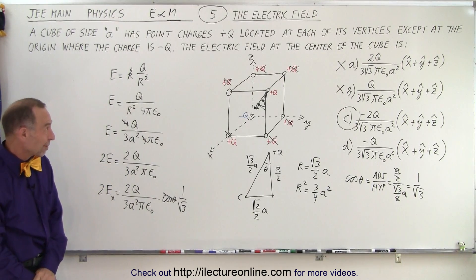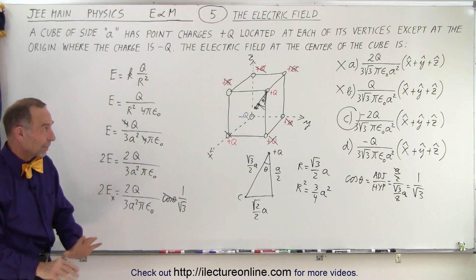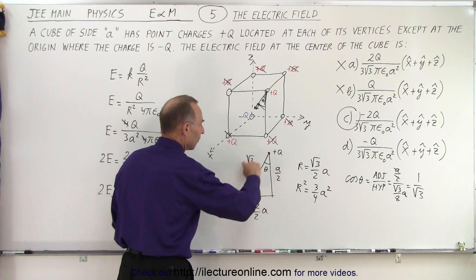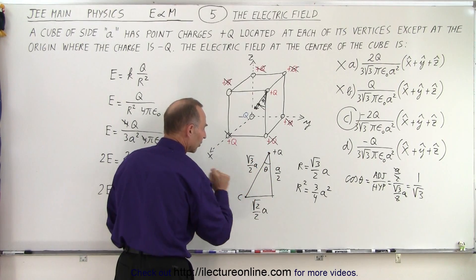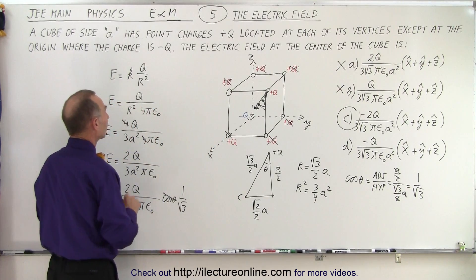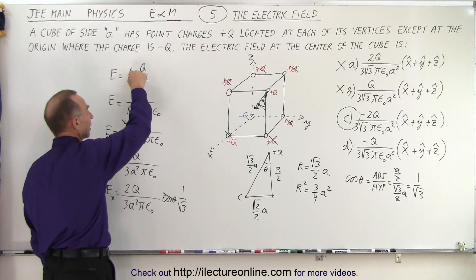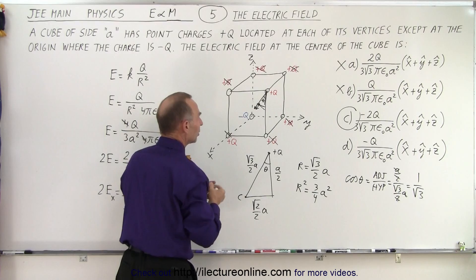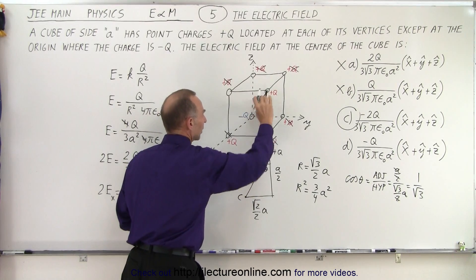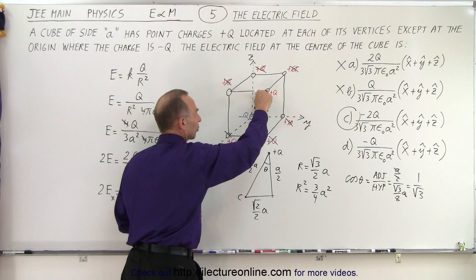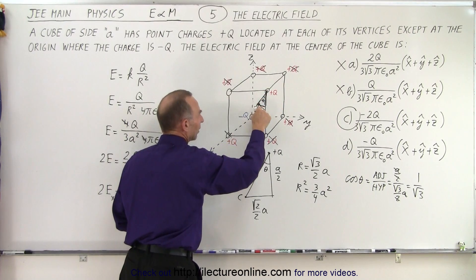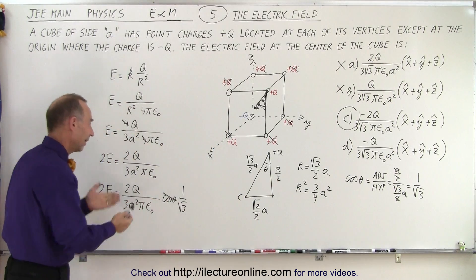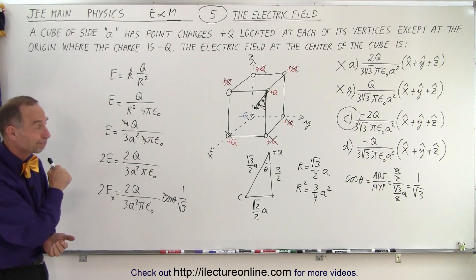This problem will take at least three minutes to do because there's a lot to think about. Think of the triangle to get the right value for the distance from the corner to the center of the cube. Start with the general equation for the electric field, writing k as 1 over 4π epsilon-naught. The distance r comes from the triangle relationship: A over 2, square root of 2 over 2 times A, and square root of 3 over 2 times A. Once you have that relationship, find r, then crank through the calculation — and that is how it's done.